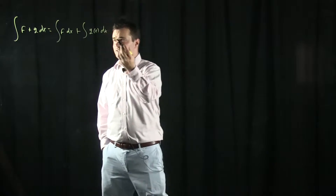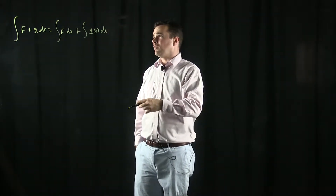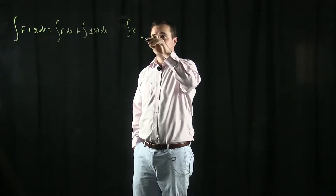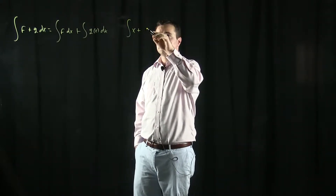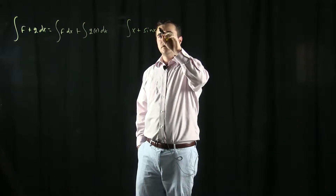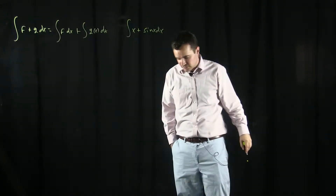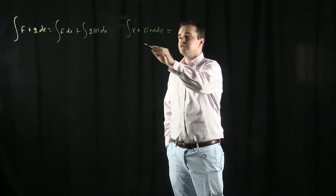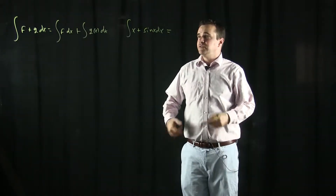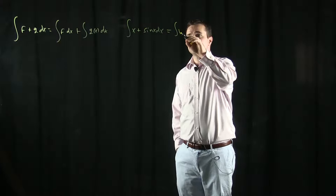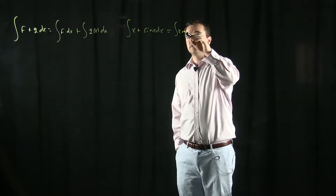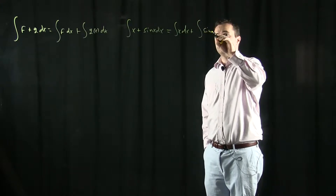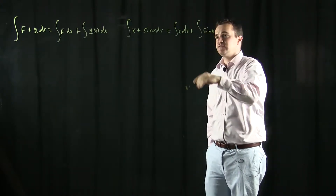For a quick example, what if I take f(x) = x and g(x) = sin(x), and I want to calculate the anti-derivative of that? This rule would tell me that this is going to be the anti-derivative of x dx plus the anti-derivative of sin(x) dx.